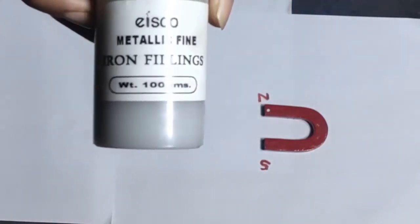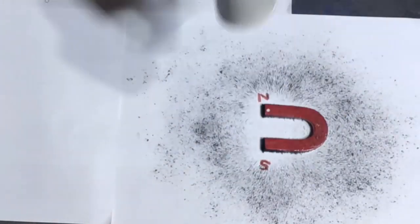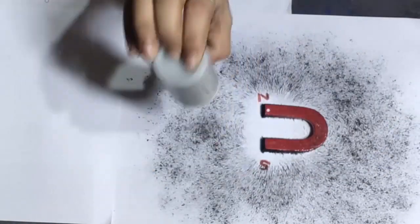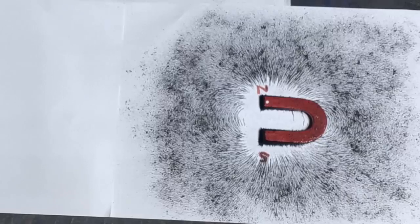I have fine iron filings with me and sprinkling this around the magnet. Now see, the iron filings have already started aligning in a pattern. By gently tapping around the board, the pattern will become very clear.